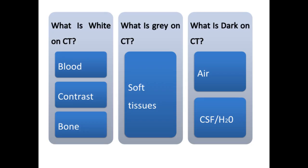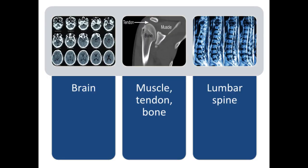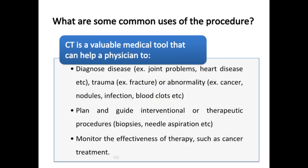On a CT scan, blood, contrast material, and bone appear bright. Soft tissues appear gray, and air and CSF or water appear dark. These are some images of different parts of the body showing CT scan results.